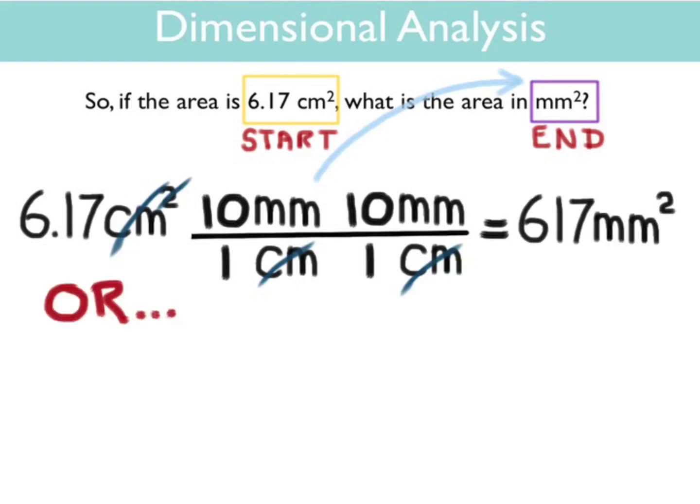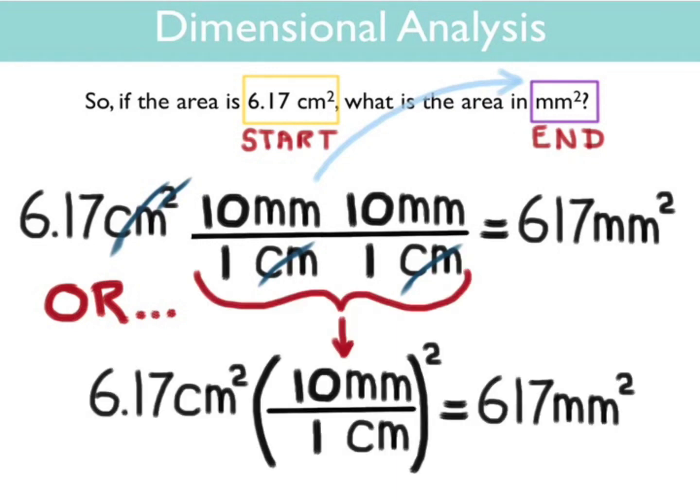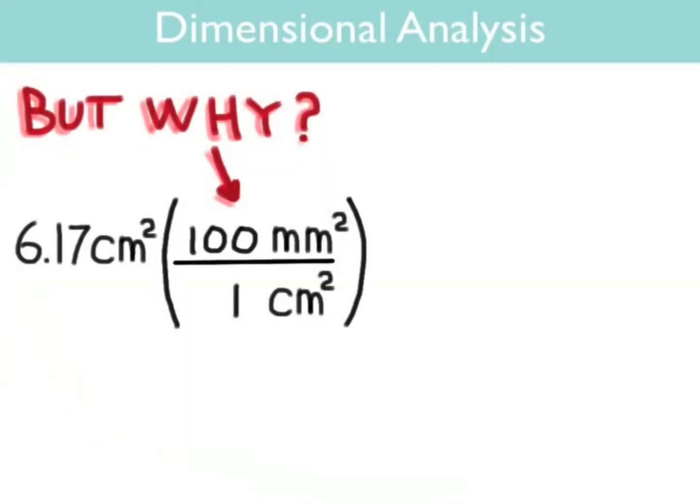Or another way to write this would be 100 millimeters squared per 1 centimeter squared. But why are there 100 millimeters squared in 1 centimeter squared? Let's take a look.